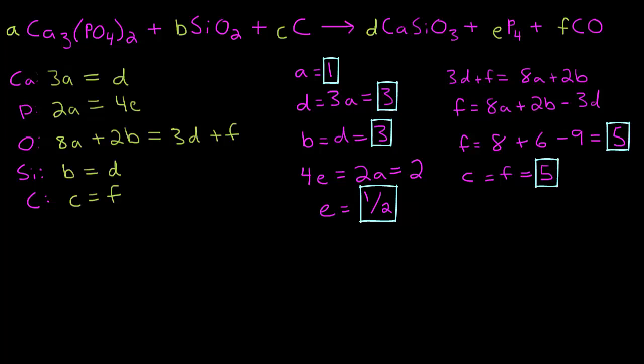Okay, so we have a fraction here. Our E equals one half. So that means we need to multiply all of our solutions by two. So if we do that, we have A equals one times two, so two. B equals three times two, so that's six. C equals five times two, so ten. D equals three times two, so that's also six. E equals one half times two, so one. And F is five times two, that is ten.